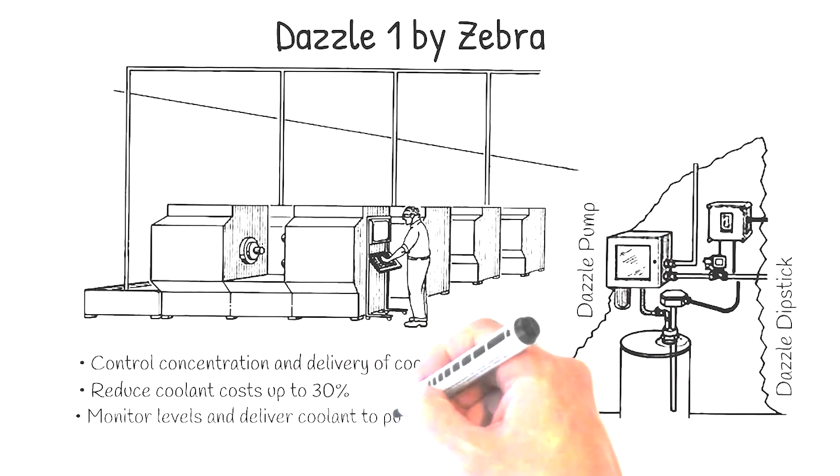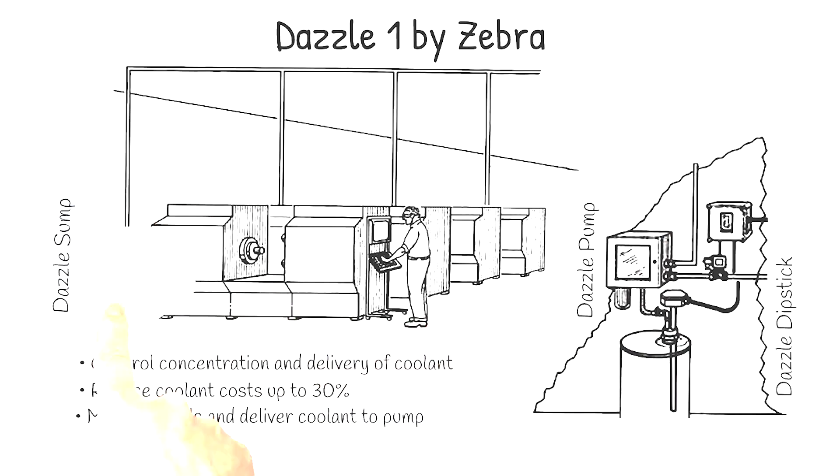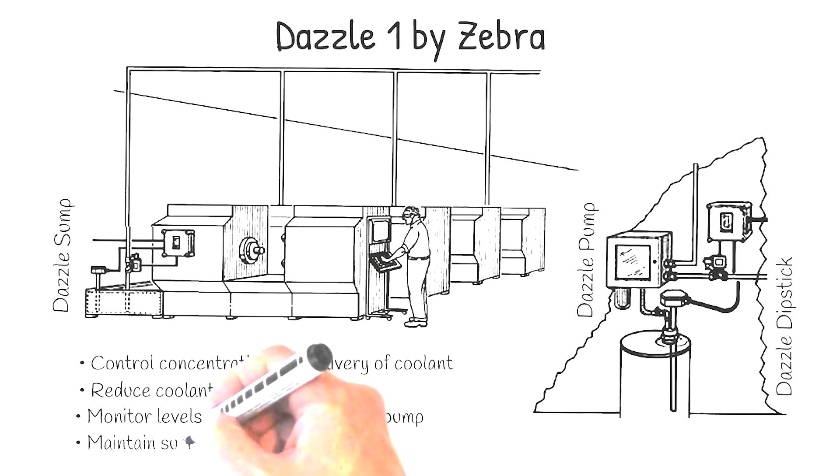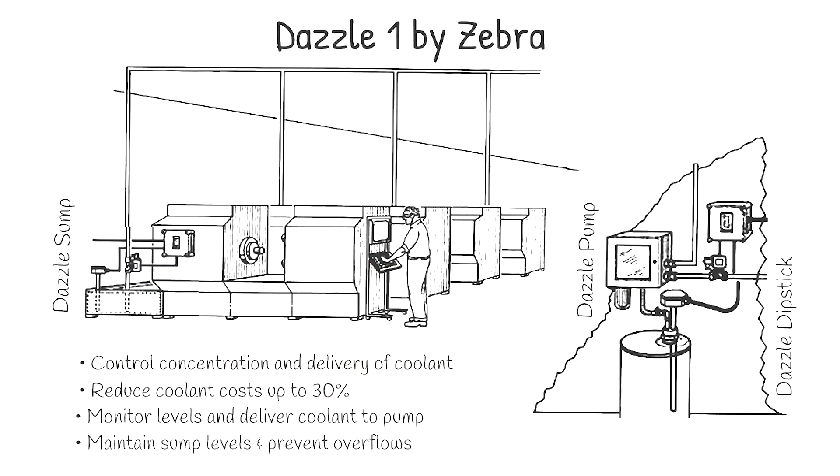The Dazzle Sump, a programmable controller that maintains sump levels at optimal field-defined set points to within centimeters, preventing overflows and putting an end to bucket brigades.